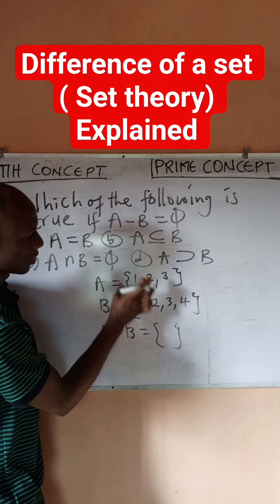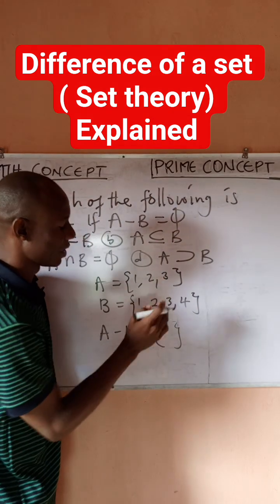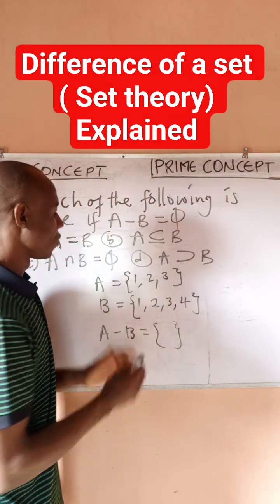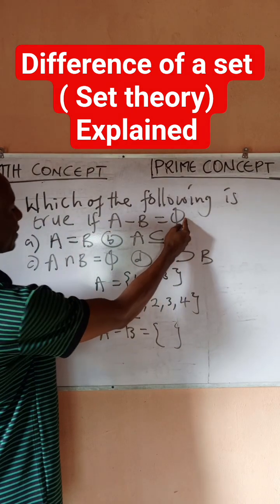That this is going to be an empty set. What you would have left in A would be empty. But of course you still have something in B which is 4. So what it means is that for A difference B to be empty set...